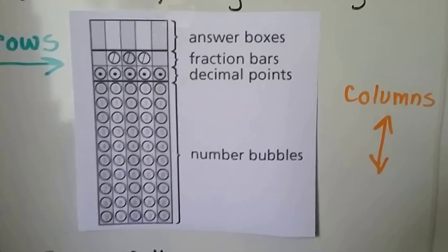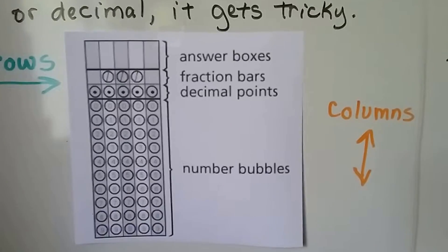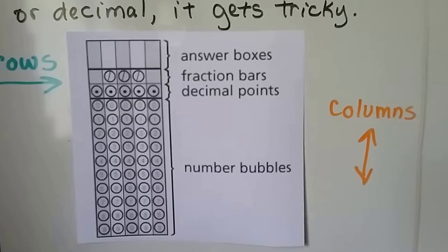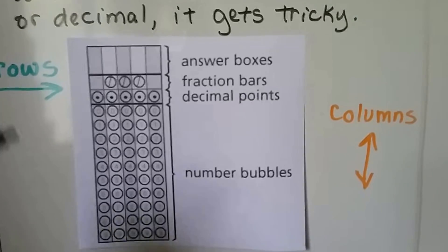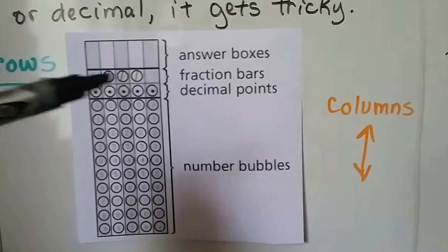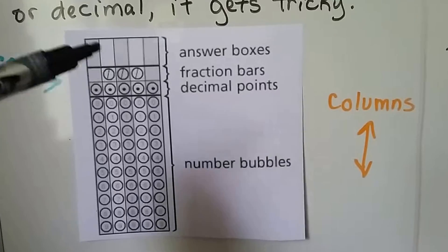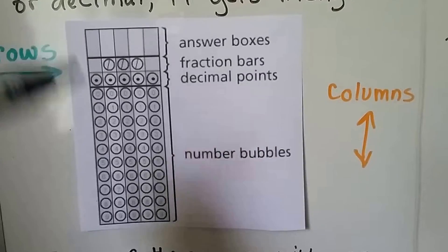So I want you to remember that rows go across and columns go up and down. You'll thank me for that when you get into algebra and matrices. These rows for the fraction bar and the decimal point, we need these. This is where we actually write in the answer on the top.